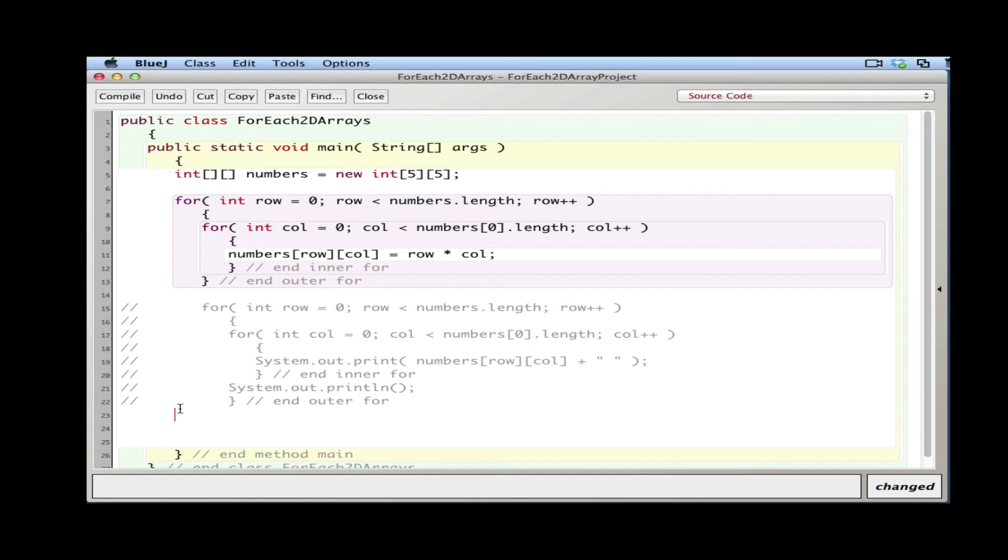The outer for loop extracts an array because, if you recall, a 2D array is an array of arrays. So I grab the array first, then the inner for loop will go through it.